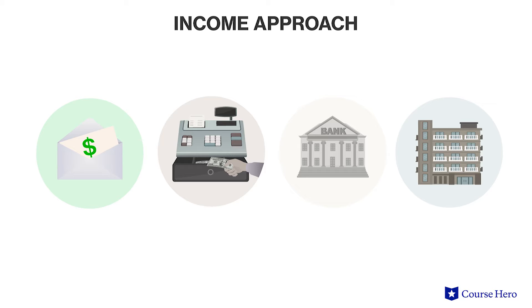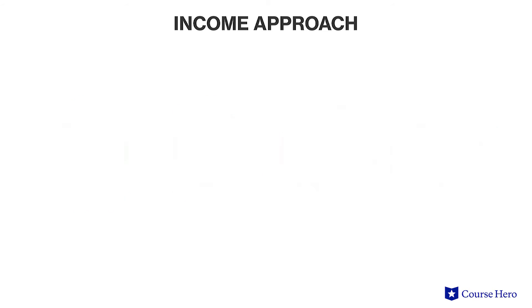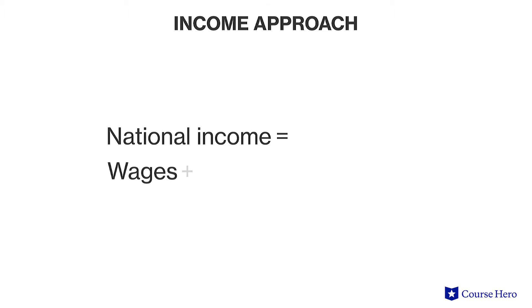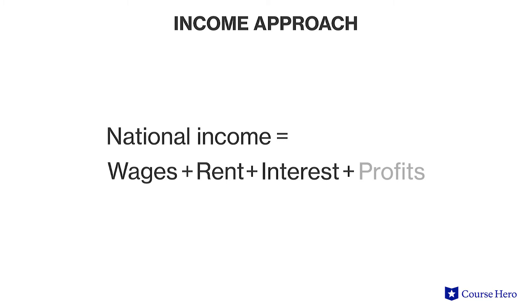These sources are the income paid to the factors of production, i.e. the labor force. National income is calculated as wages plus rent plus interest plus profits. Combining these various sources of income allows economists to calculate the total national income.